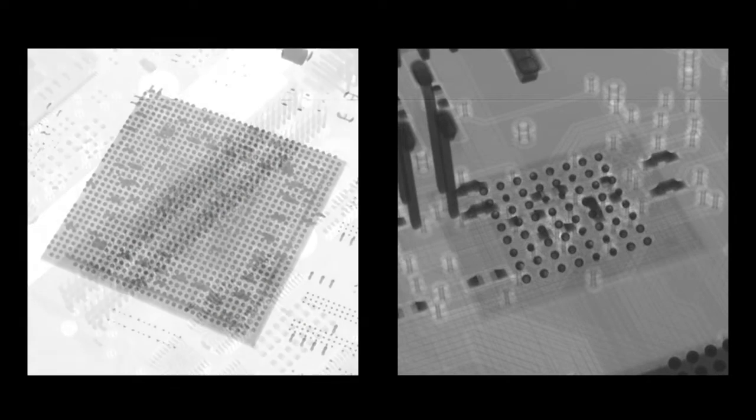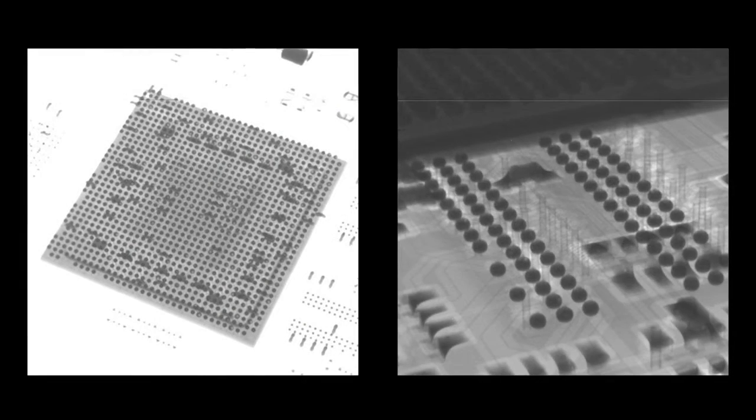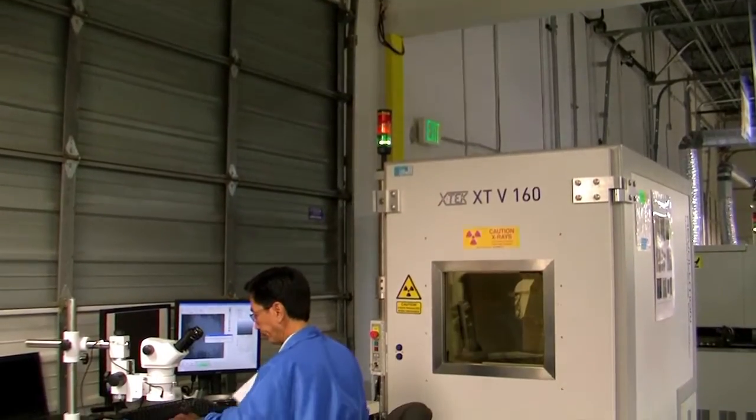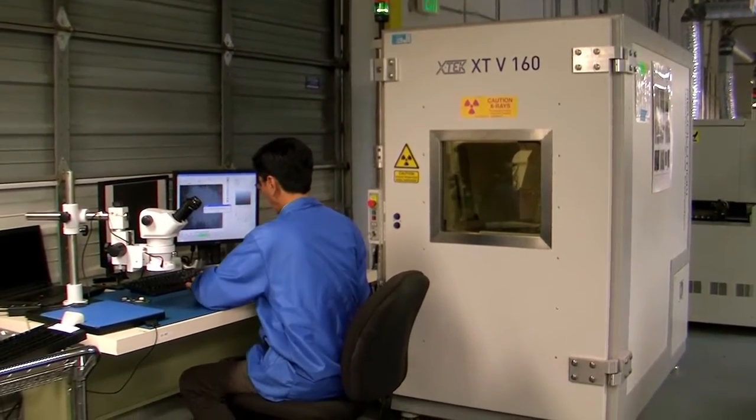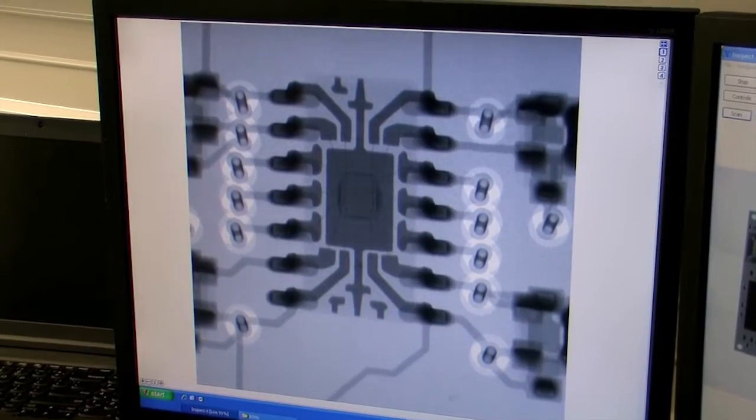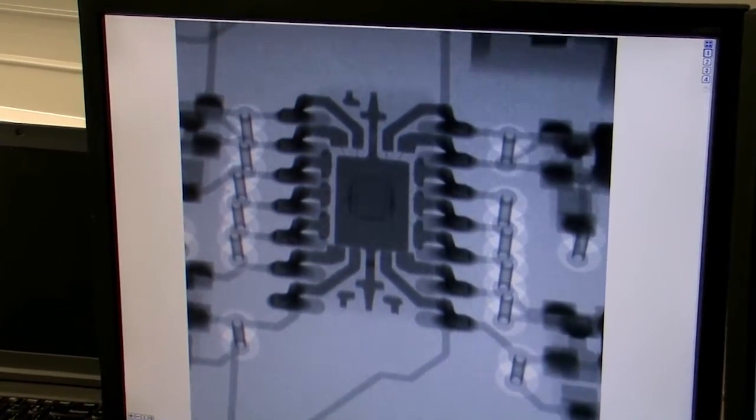The most common way to test the BGA and detect a possible soldering fault is through the use of X-ray machines. Fortunately, Advanced Assembly has invested in a state-of-the-art 5-axis X-ray machine, giving us the ability to view component mountings in all three dimensions.